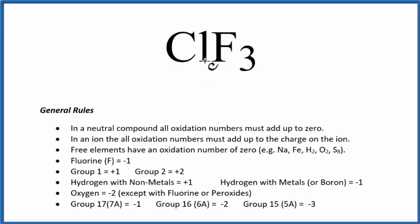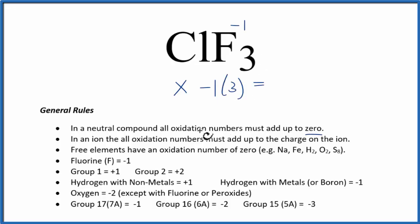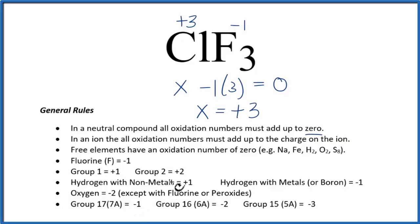For ClF3, chlorine trifluoride, it's a neutral compound so everything adds up to zero. Going down the list, fluorine is always minus one, so each fluorine is minus one. Setting up the equation: x for chlorine plus minus one times three fluorines equals zero. Solving gives x equals positive three, which is the oxidation number on the chlorine. Later in the rules, group 17 or 7A — where chlorine sits as a halogen — is minus one, but since that rule comes after the rule for fluorine, we can ignore it. The rule to remember: fluorine is always minus one.